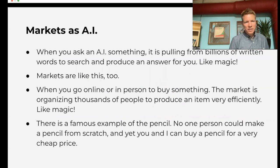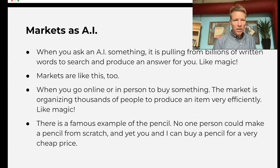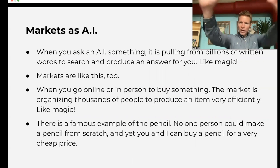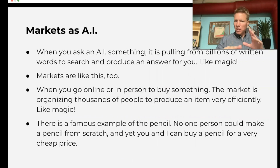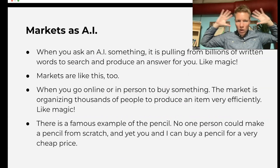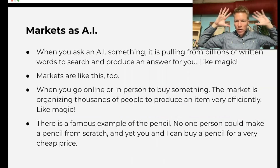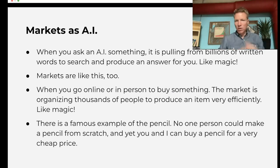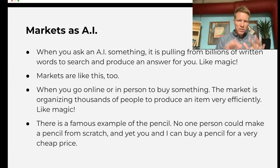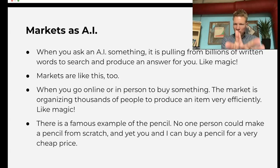Then we get to our first analogy, which is to think of markets as AI. AI is obviously very popular — everyone's talking about it. What AI is doing when you type a question into ChatGPT is basically pulling from all that knowledge, all that written word, to give you an answer. And when it works, it can feel like magic. Markets are like this too.